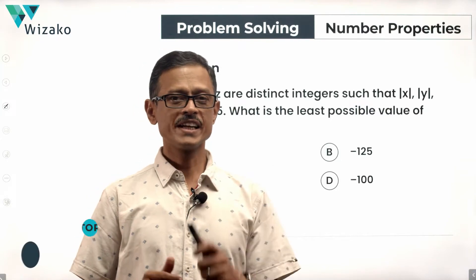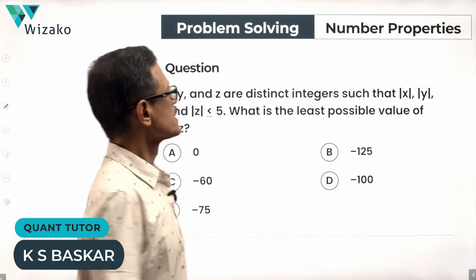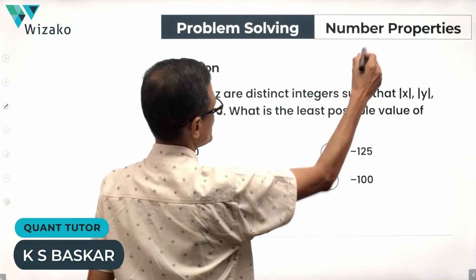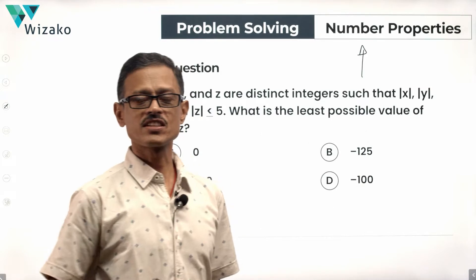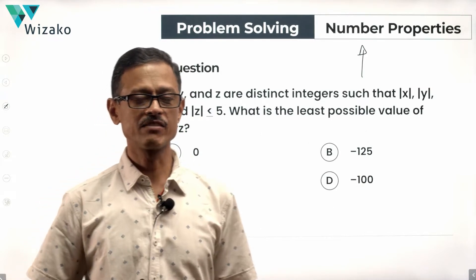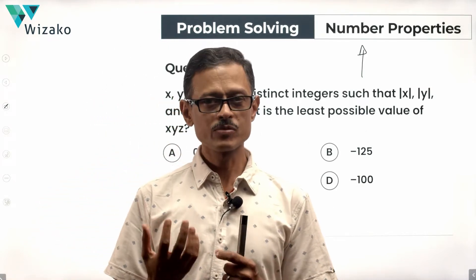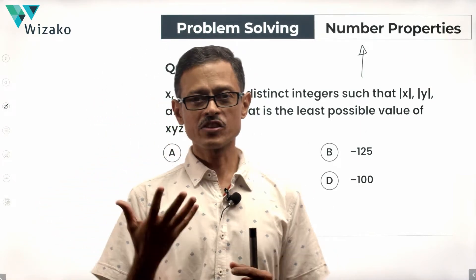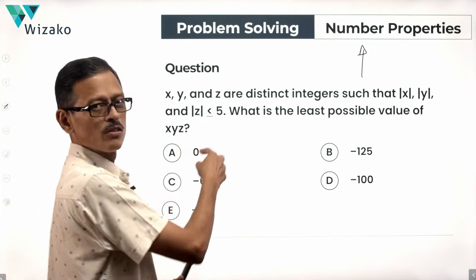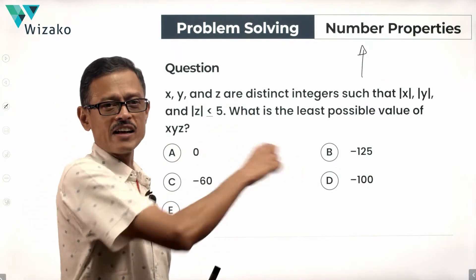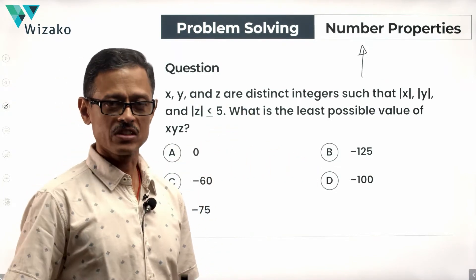Hi everyone, this is a GRE quantitative reasoning practice question from the topic number properties. It's an interesting medium difficulty question. The question is set as a problem-solving question, meaning you will have a question stem followed by five answer options, and there is only one correct answer option.